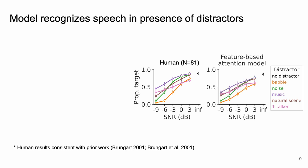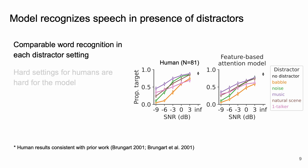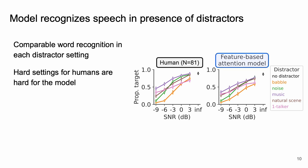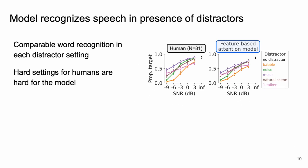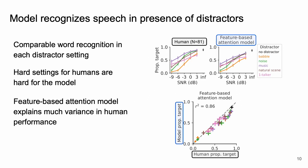When simulating the same experiment on our models we see it can recognize speech in the presence of distractors and it does so quite comparably to humans. Also we see that the settings that are hard for humans are hard for the model and that the model explains a great deal of the variance in the human performance within this experiment.